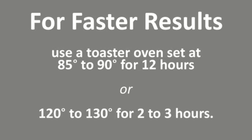If you need to speed up the process, use a toaster oven set at 85 to 90 degrees for 12 hours, or 120 to 130 degrees for 2 to 3 hours for curing.